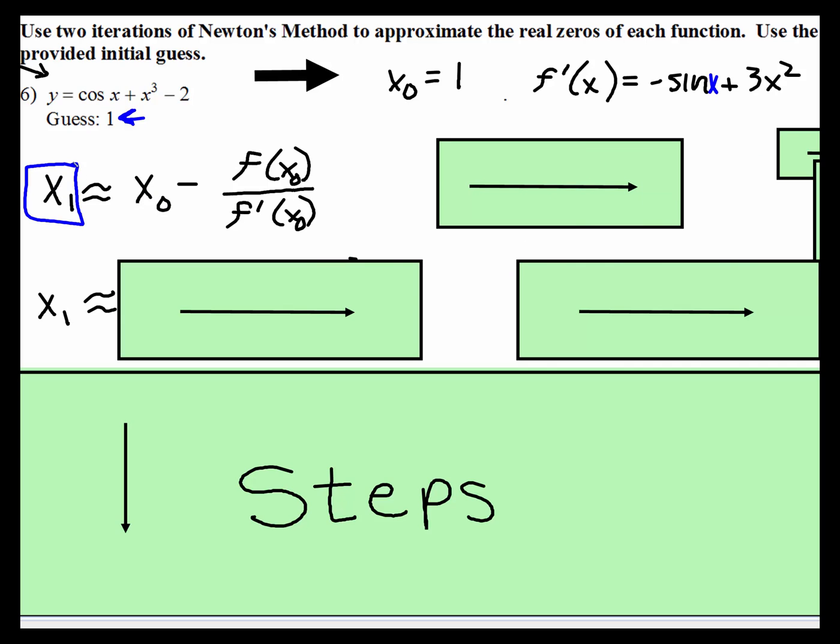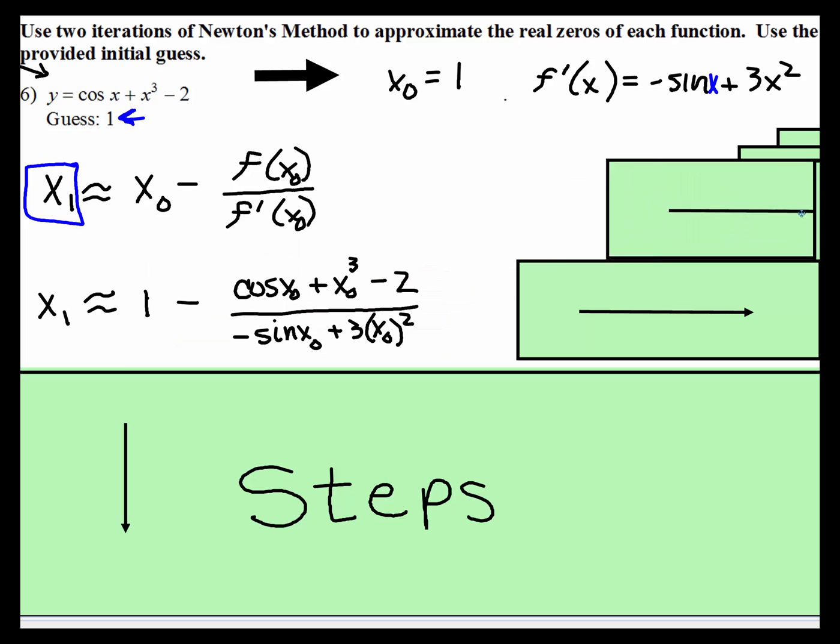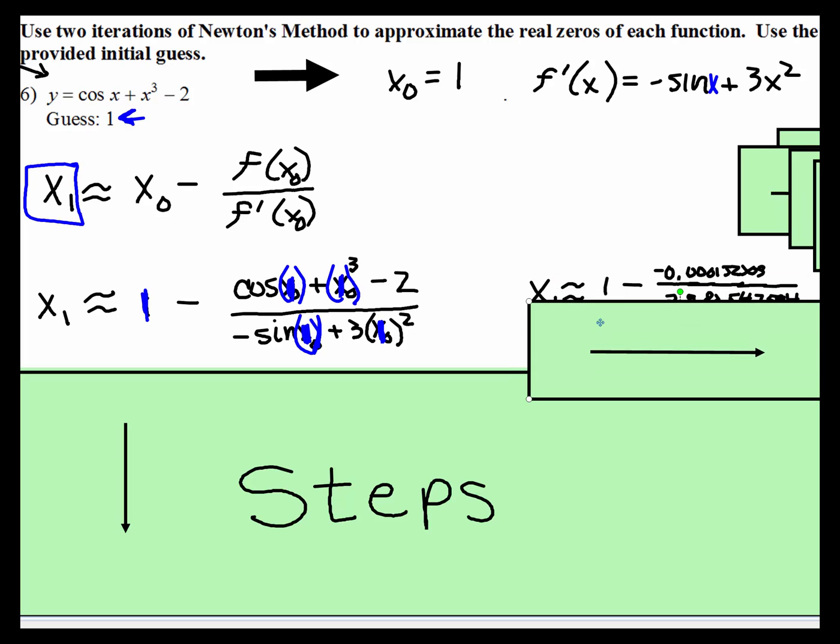The x value that you're looking for is equal to x naught subtract f of x naught divided by f prime of x naught. So x naught is one, subtract the function. So we can actually put in cosine of one plus one cubed minus two over the derivative, which is negative sine. Instead of x naught we can put one plus three x squared. Instead of x naught we're going to put one. And then we're going to simplify that.